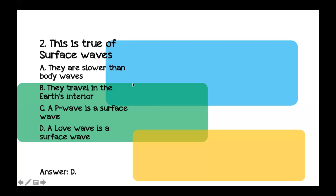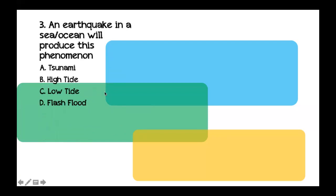The answer is D — a Love wave is a surface wave. Recall that body waves are your P waves and S waves, while surface waves are your Love waves and Rayleigh waves. Next item: An earthquake in a sea or ocean will produce which phenomenon? A) A tsunami, B) a high tide, C) a low tide, or D) a flash flood.